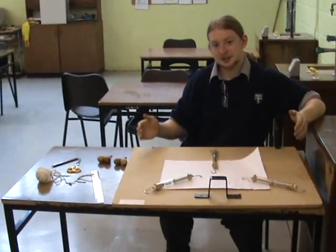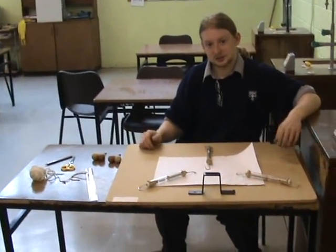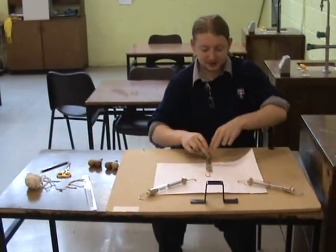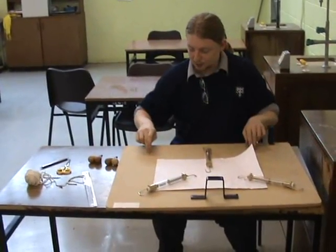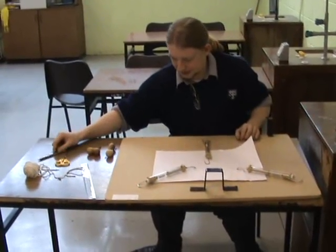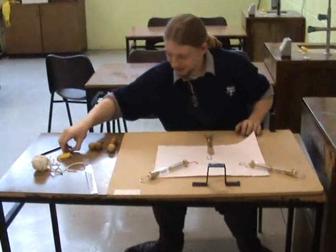The aim of the experiment is to find the resultant of two vectors. The apparatus consists of three Newton balances, paper, a board, some awls, a ruler, a pencil, string, and scissors.